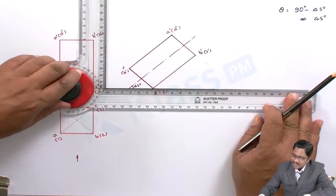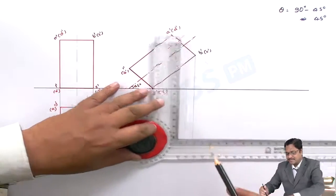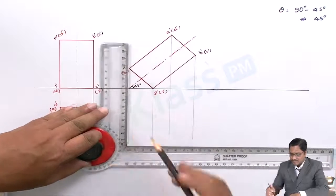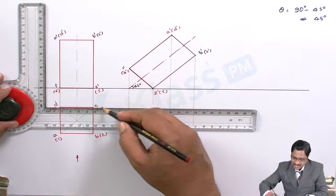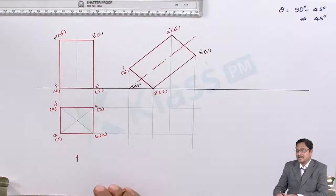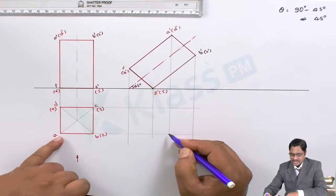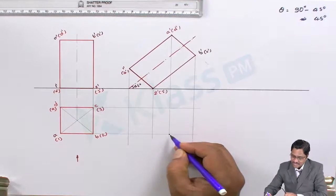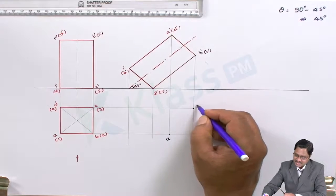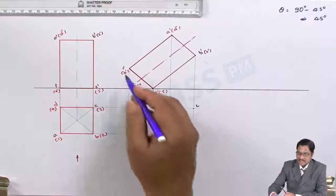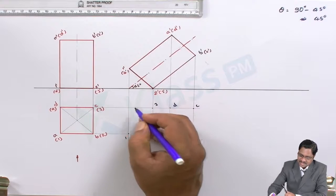Draw projectors from every reference corner of the front view downward. Track lines from the previous top view to obtain intersection points. Where A dash's projector intersects with the tracking line from A in the first top view gives the new point A. Similarly locate B, C, D, and the bottom points 1, 2, 3, 4 — each found where the projector from the front view intersects the corresponding tracking line from the primary top view.